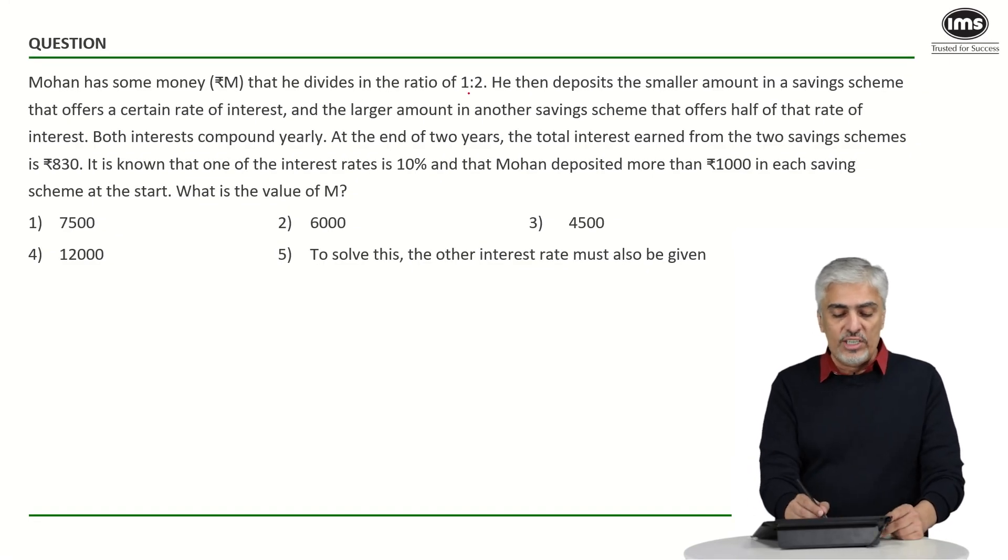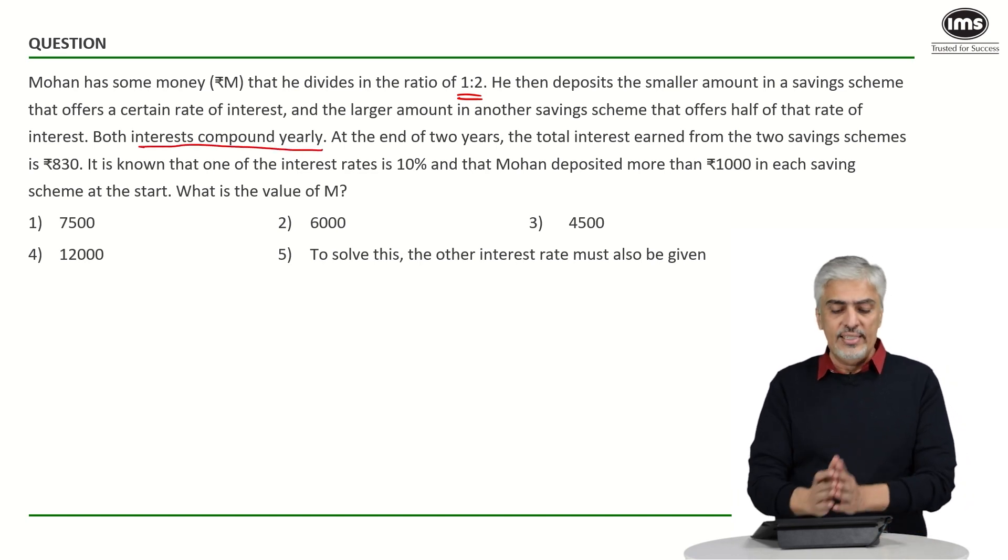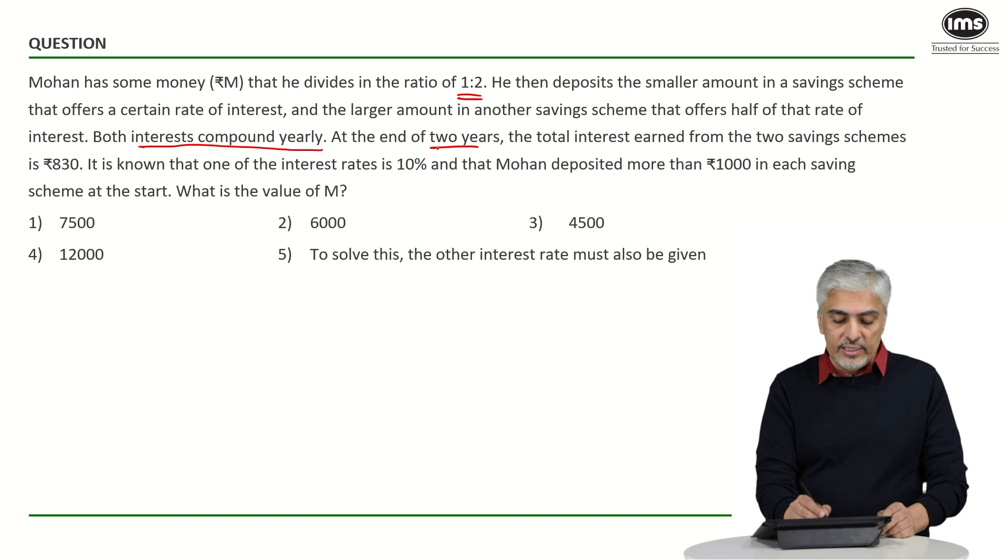Mohan has some money which he has divided in the ratio of 1 is to 2. He then deposits the smaller amount in the savings schemes that offer a certain rate of interest and a larger amount in other savings schemes which offers half the rate of interest. Both interests are compounded yearly. So, normal compound interest. At the end of 2 years,